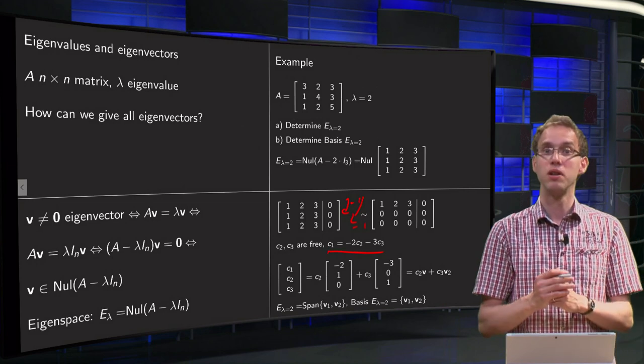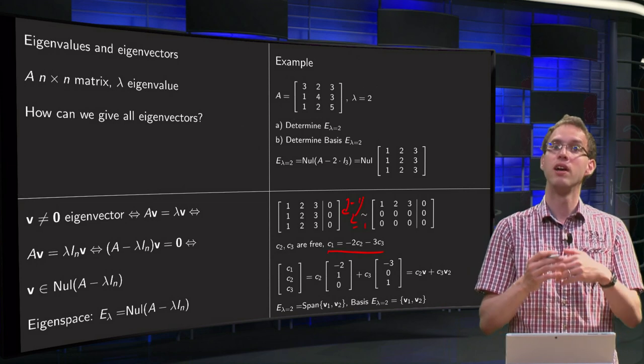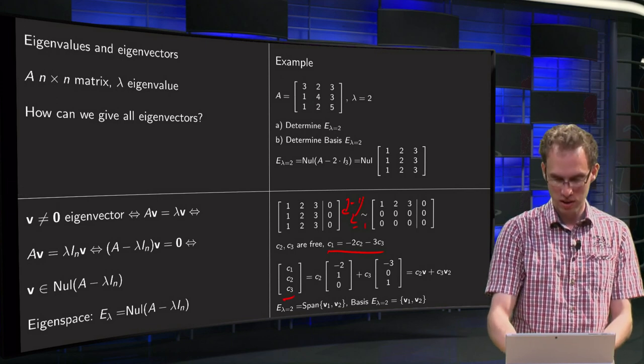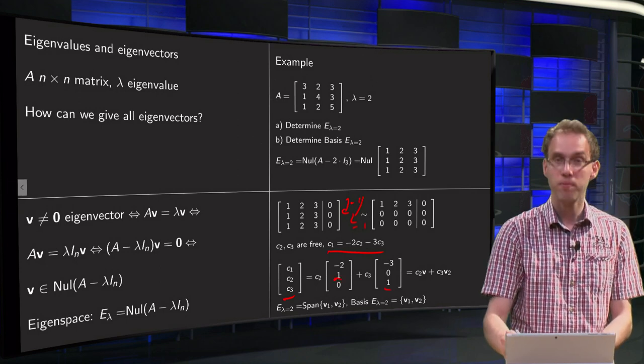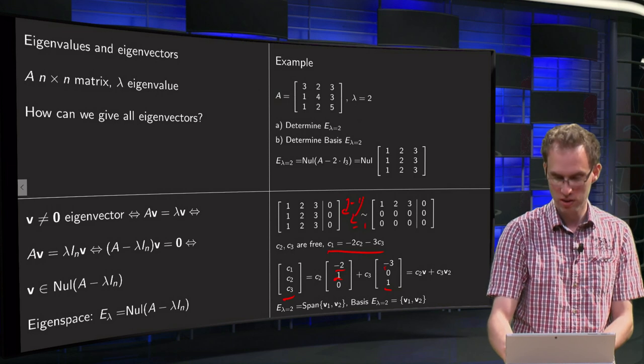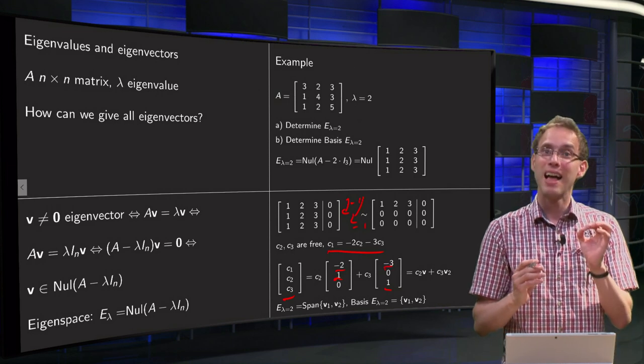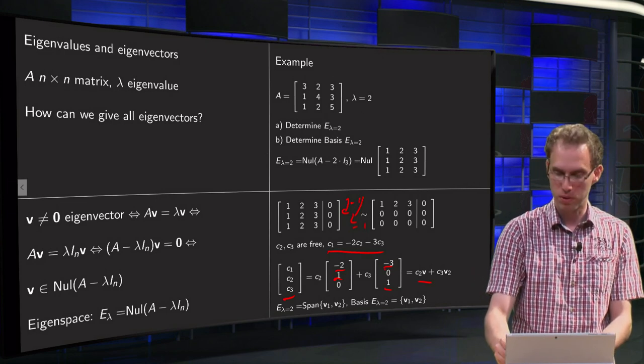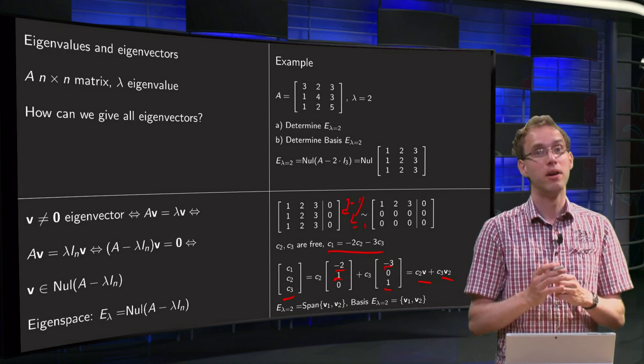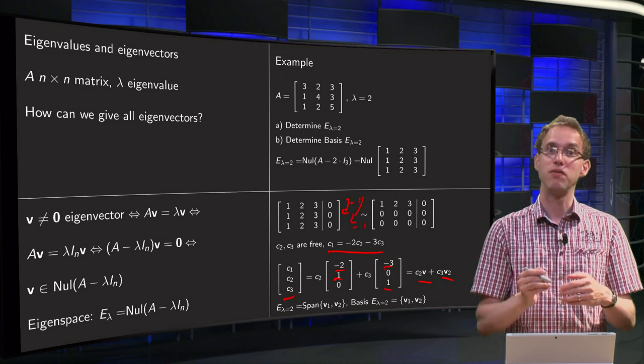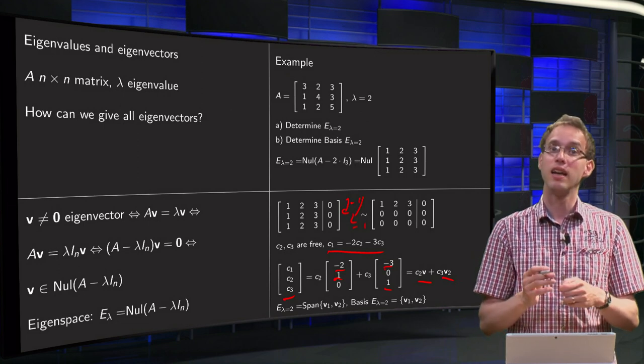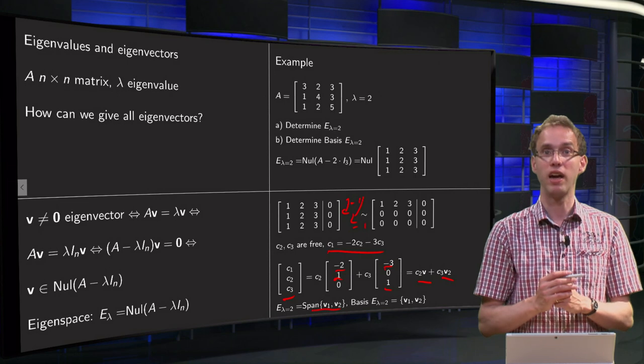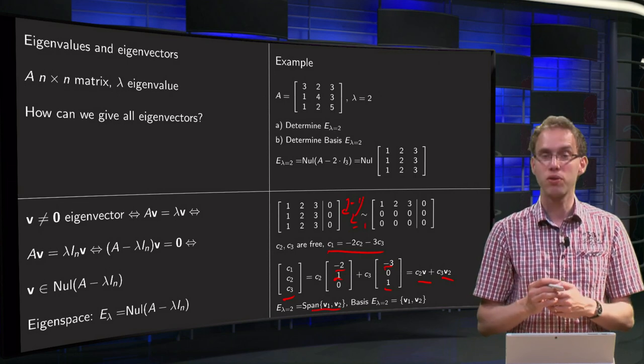C1 equals minus 2 times C2 minus 3 times C3. We make the parametric vector form so we put C3 in vectors, and then we get C2 and C3 are free and C1 equals minus 2 C2 minus C3, and we can write this as a linear combination of two vectors as C2 times V1 plus C3 times V2. So we see the null space of A minus 2I is in fact the span of V1 and V2. That means that our E lambda, which is the same as this null space, is in fact the span of V1 and V2.